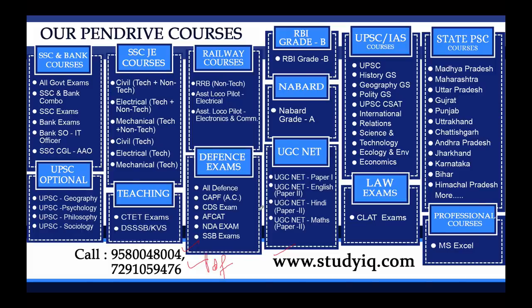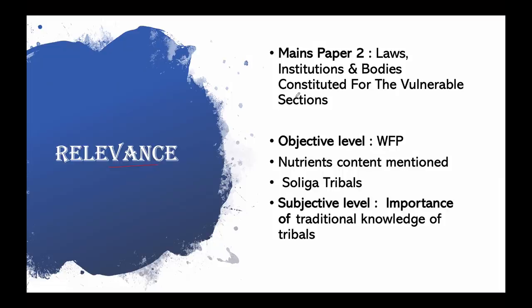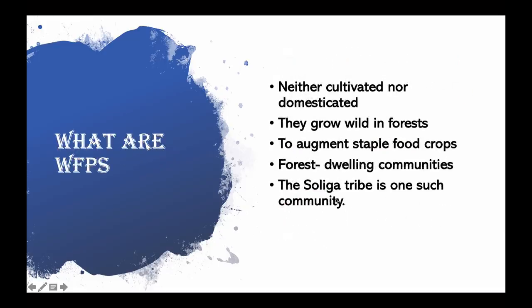From an examination point of view, in your Mains Paper 2 this topic will be covered. At the objective level, you should know what wild food plants are, how nutritional they are, what nutrient content they have, and who the Soligas are. At the subjective level, the importance of traditional knowledge of tribals is key — tribals have a lot of traditional knowledge about how to grow these wild food plants and how they are useful. Their cultivation is even predictable to these tribals because of their traditional knowledge.